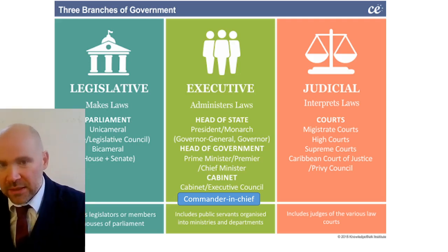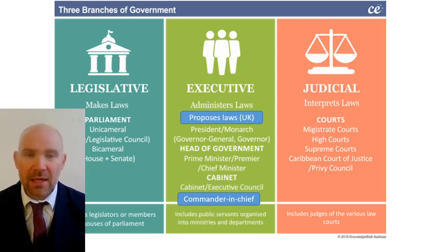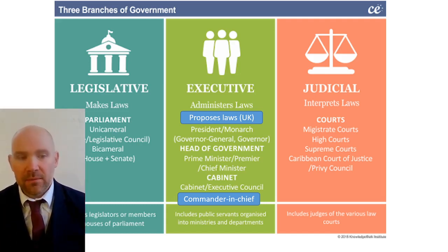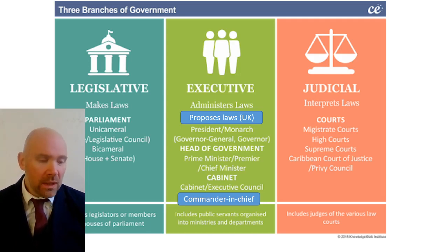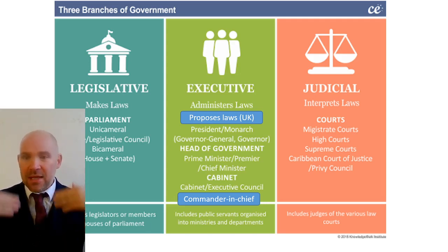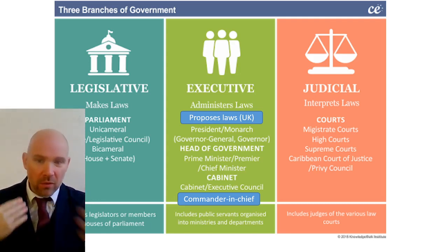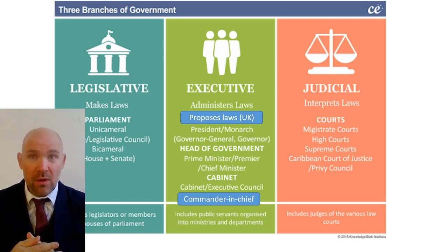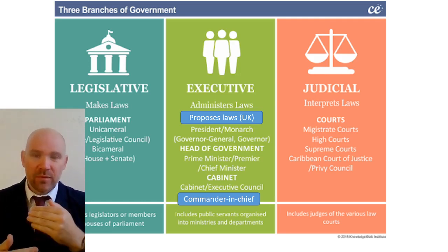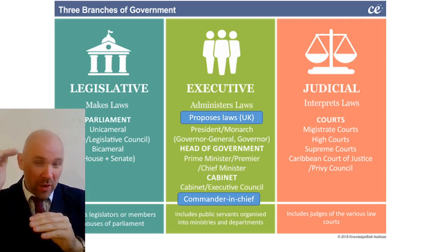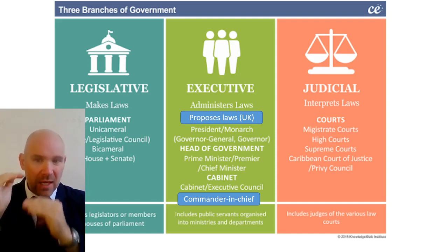Why is it slightly more complicated in the UK? Because in the UK, our executive also proposes laws. So the executive — Boris Johnson and the cabinet — will say, we think there should be a tax rise, and they send that to the House of Commons. The House of Commons will debate it, discuss it, do a report on it, and then ultimately vote yes or no. And then the executive will enforce that tax rise. So in the UK, the executive proposes laws and administers laws.